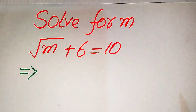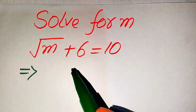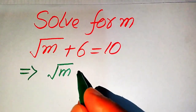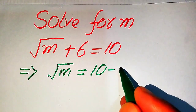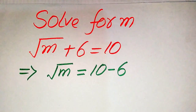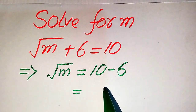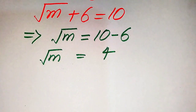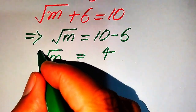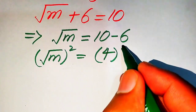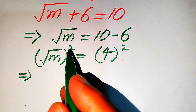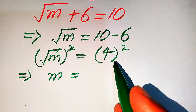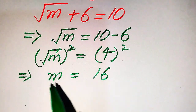For this, we will move the 6 to the right hand side. After moving the 6 to the right hand side, it will be written as square root of m equals 10 minus 6. In the next step, 10 minus 6 becomes 4, and on the left hand side we have square root of m. In order to eliminate this square root from the left hand side, we need to take a square on both sides. After squaring, the square root is eliminated and we get m equals 4 squared, and 4 squared equals 16.